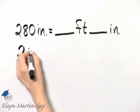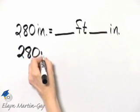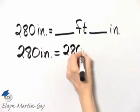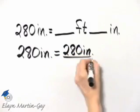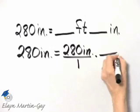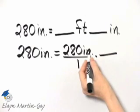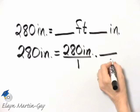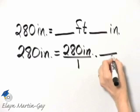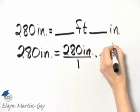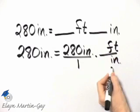We can say 280 inches is equal to 280 inches over 1 times. We want to multiply by the unit fraction so that inches divides out. So I'll place inches in the denominator. And so that I have feet, I'll place feet in the numerator.